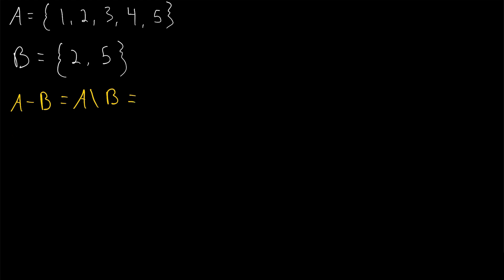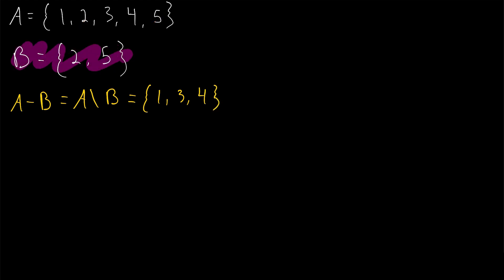So if we do that, what are we going to get? We see that 2 is an element of B, so it's not going to be an element of A minus B. And 5 is an element of B, so 5 will not be in our set either. So we've got the set containing 1, 3, and 4. You might notice that in this example, B is a subset of A, so every element of B gets removed from A when we look at this relative complement or set subtraction.